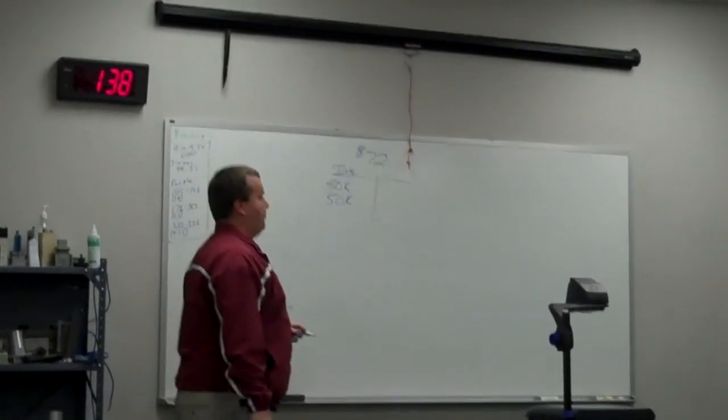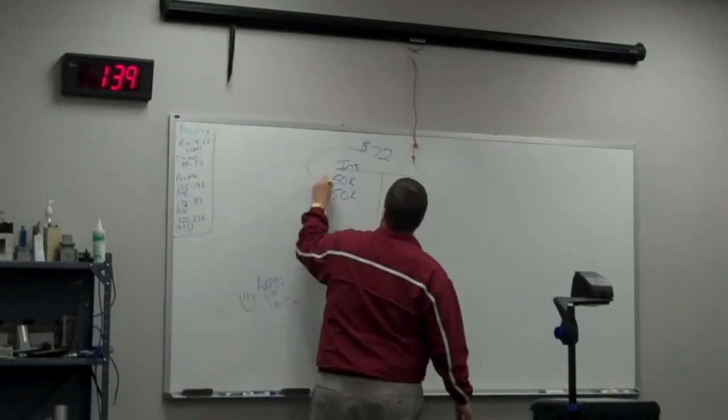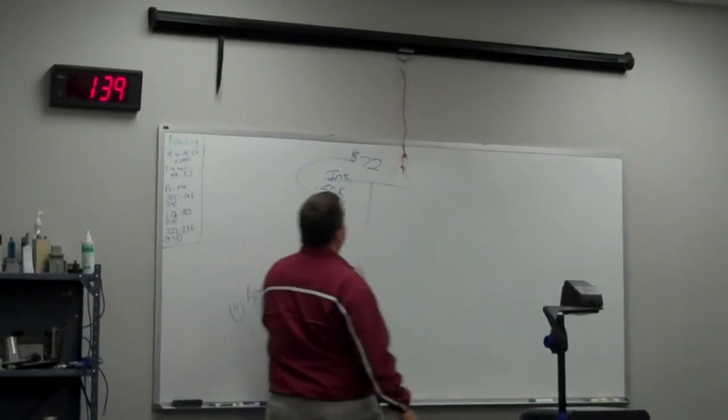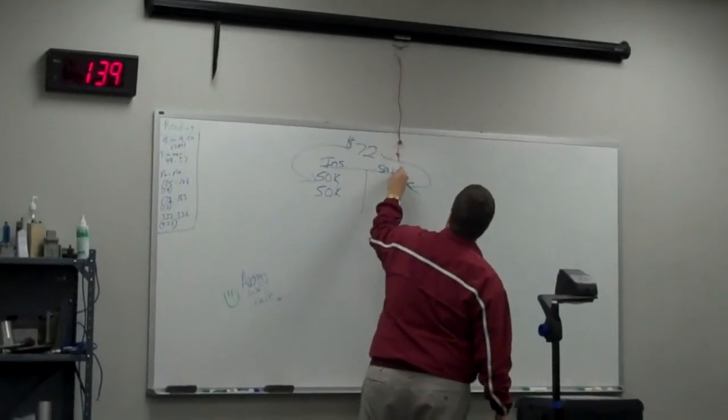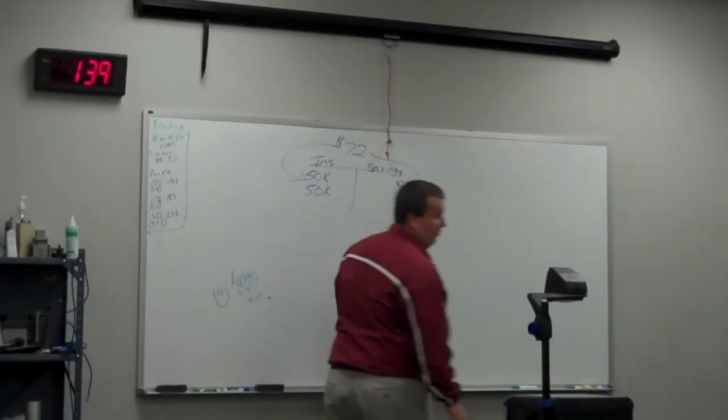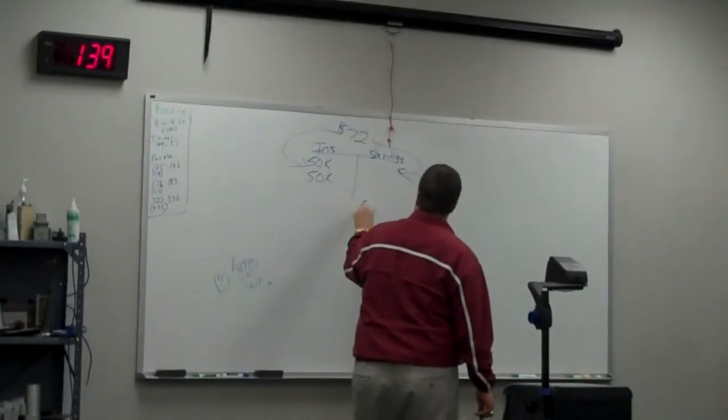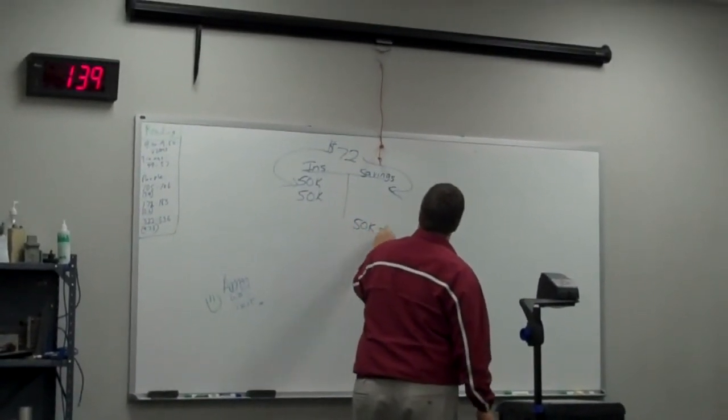The great thing about this insurance is we're going to take part of the money every month, use it to pay for the cost of the insurance. We're going to take another part of the money and put it into a savings account. So if you don't die when you retire, there's going to be $50,000 in savings here.